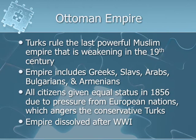The Turks ruled the last powerful Muslim empire and continued to weaken throughout the 19th century. The Ottoman Empire included Greeks, Slavs, Arabs, Bulgarians, Armenians, and Turks. In 1856, all citizens were given equal status in the empire due to pressure from European nations. However, this angered conservative Turks who valued their highest status within the empire. The Ottoman Empire was dissolved after World War I and no longer exists.